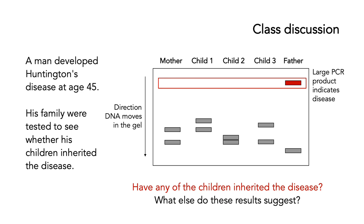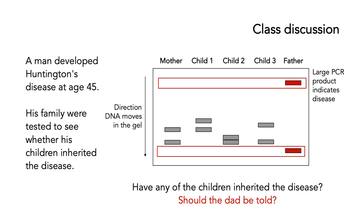The first question: have any of the children inherited the disease? The answer is no. The father has a very large band, indicating he carries the disease-causing allele with the amplified CAG repeat. But no one else carries that large allele — none of children one, two, or three. However, the key point is that none of the children carry either of the father's bands. So he's not actually the biological father of these children.